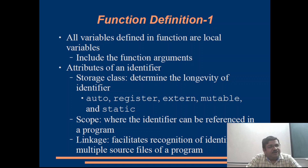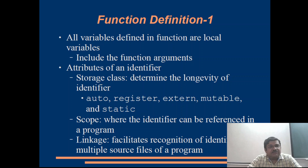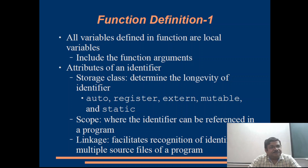We can modify the behavior of these identifiers by prefixing them with specific keywords. Auto, or automatic, variables are the default type — they are created automatically whenever the function is called and are destroyed as soon as the function returns control back to the calling function. Their life is limited to one function call.